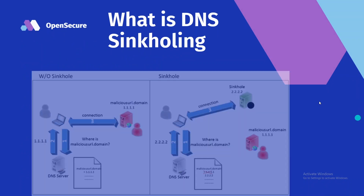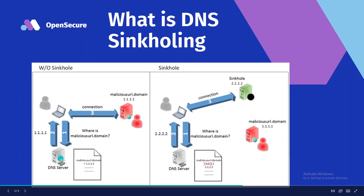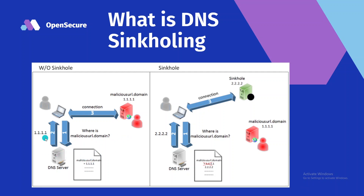So first things first, what exactly is DNS sinkholing? So as we talked about in the previous example, when my endpoint says hey, where is maliciousURL.domain? My endpoint, which will be our Windows server here, will ask our DNS server what is maliciousURL.domain — what IP address does that resolve to? Our DNS server will then give us the answer: that resolves to 1.1.1. So then my endpoint says okay, now I know where to send my traffic out to get to maliciousURL.domain — I will send my traffic out to 1.1.1.